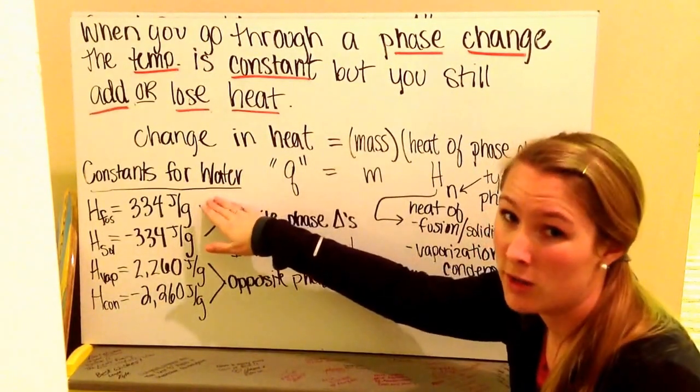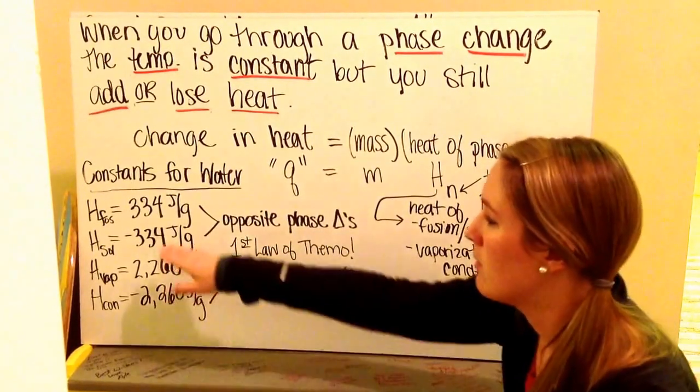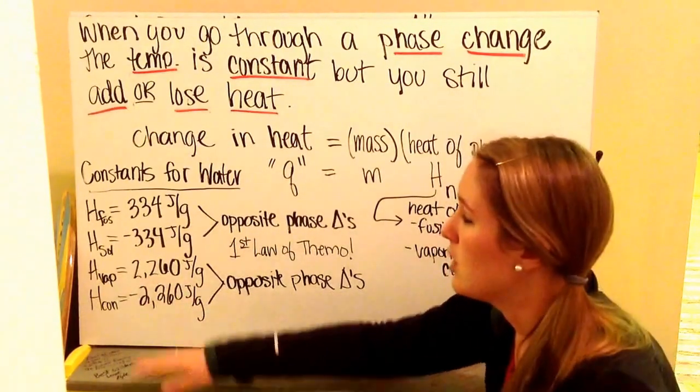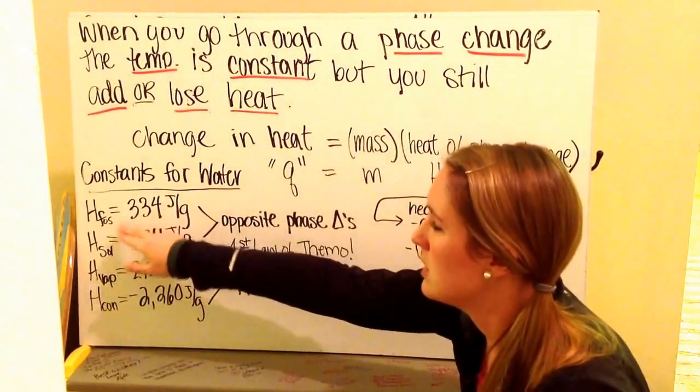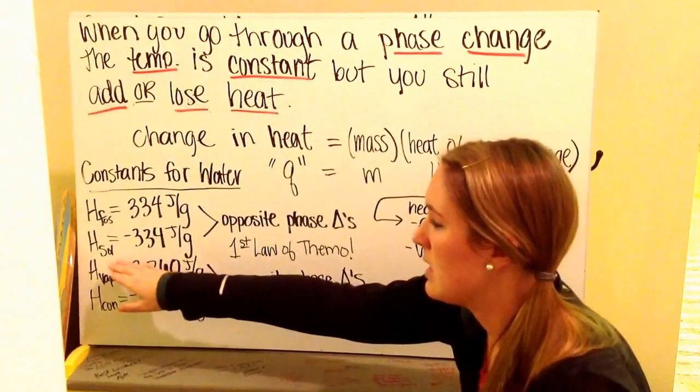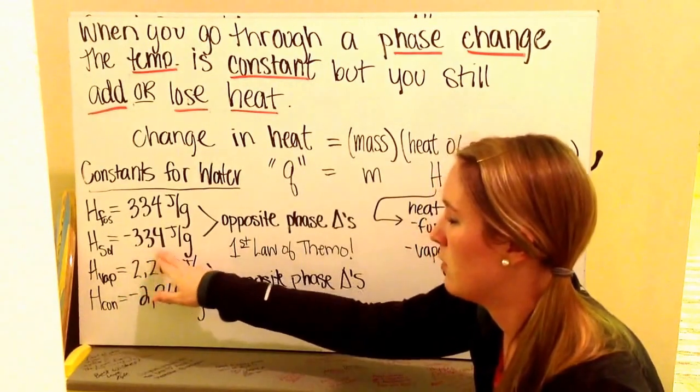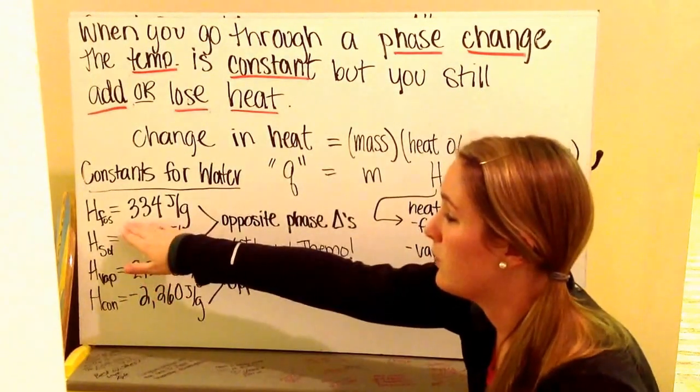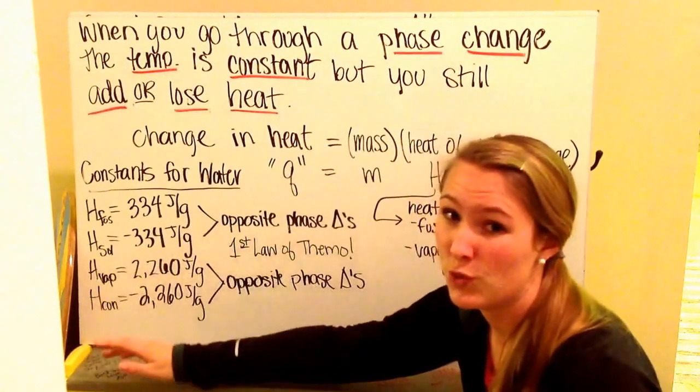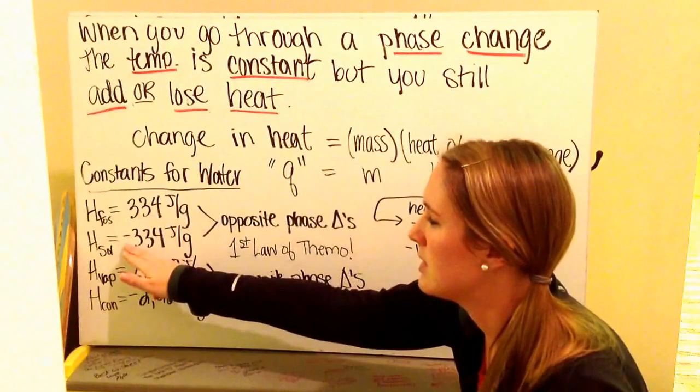Different types of phase changes or the heats for the phase change. We're going to focus on water. In your reference packet, you are given the heat of fusion and the heat of vaporization for water. You should take note that the heat of fusion is 334 joules per gram and the heat of solidification is negative 334 joules per gram. Fusion is where we're melting. Solidification is freezing. Notice that they're opposite in sign, one's positive, one's negative.